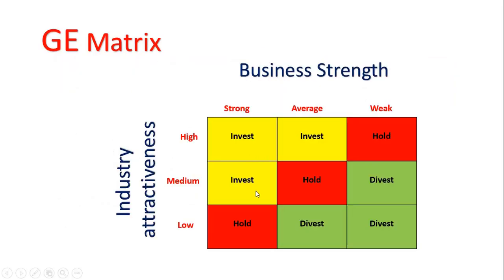To help memorize the nine-box matrix, here's a trick. Draw a diagonal strip line across the matrix — all boxes on this strip line are 'hold.' All boxes above the strip line are 'invest.' All boxes below the strip line are 'divest.' Make this line first, put hold in the strip, invest above it, and divest below it.